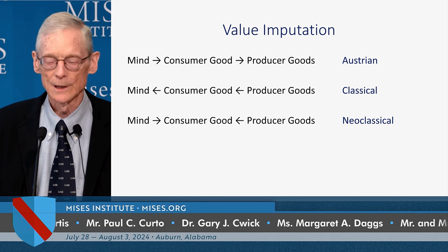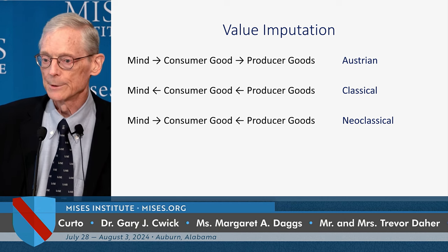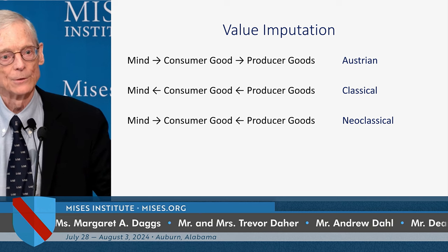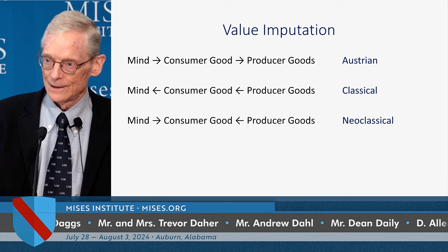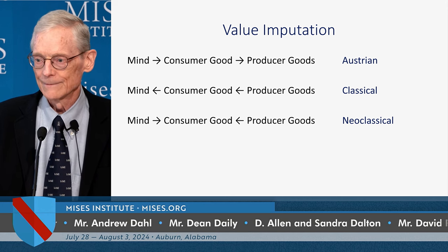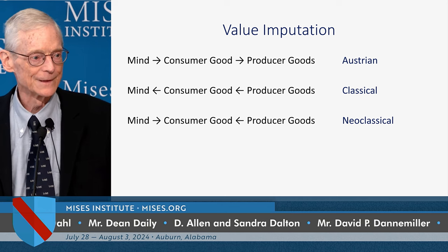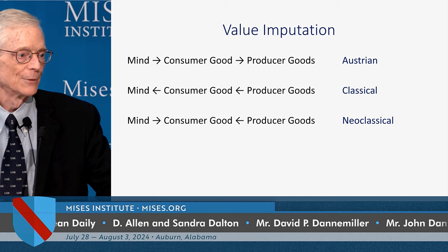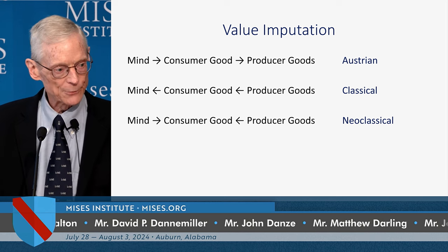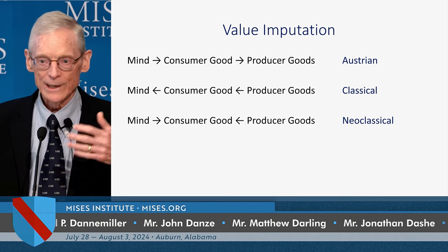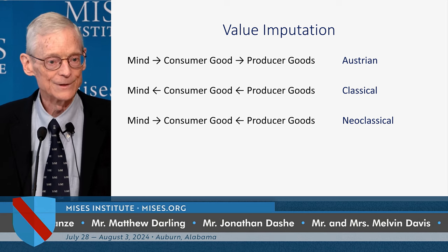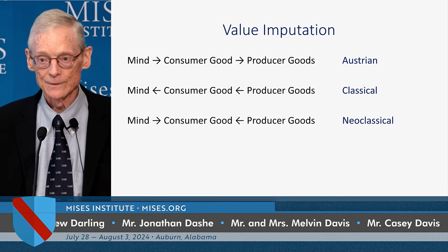Only the Austrian theory of value imputation is consistent with the basic concept of human action: that all human action aims at the attainment of an end, and therefore means always have derivative value. Means can't be valued independently from the value of the end to which we put them. If we could attain an end just by snapping our fingers instead of accumulating and using means, we would prefer it. That is the principle of imputation.